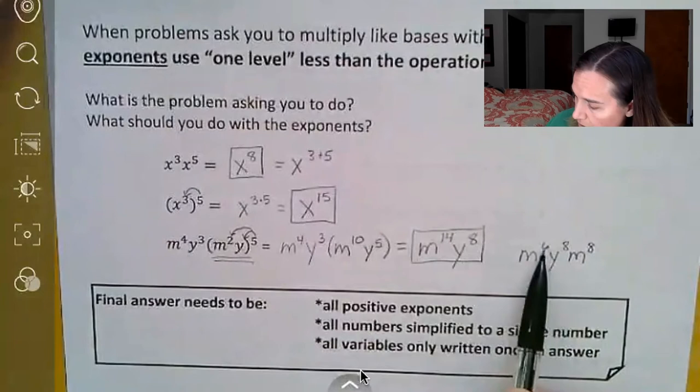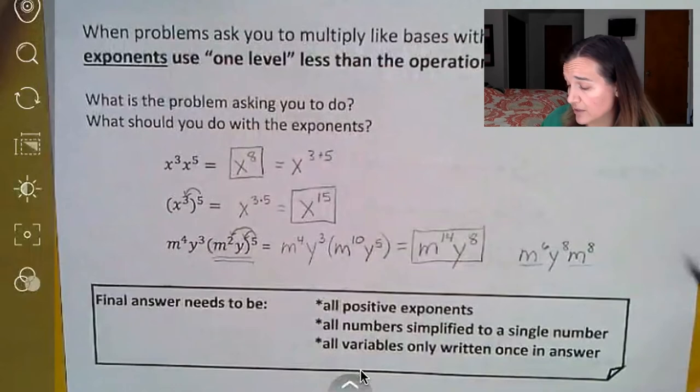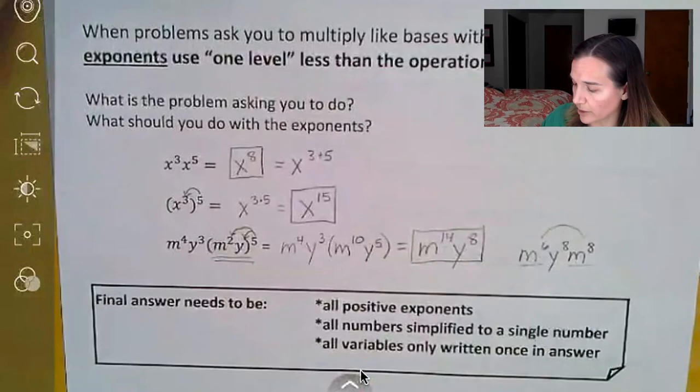Notice this six and this eight here. These bases can only show up once in the final answer. So you actually have to put these together and make it a 14. You can't have multiple variables in the same answer. They all need to be put together.